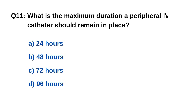Question number 11. What is the maximum duration a peripheral IV catheter should remain in place? The right option is C: 72 hours.